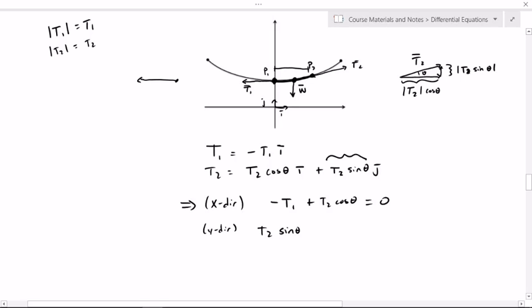I know that I've got this component right here. So T2 sine of theta, which is up, minus w, the weight down, has to also equal zero. Since w, the vector, is negative wj, it's a vector down with length w.